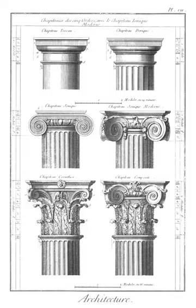Apse: vaulted semicircular or polygonal end of a chancel or chapel. That portion of a church, usually Christian, beyond the crossing and opposite the nave. In some churches, the choir is seated in this space.